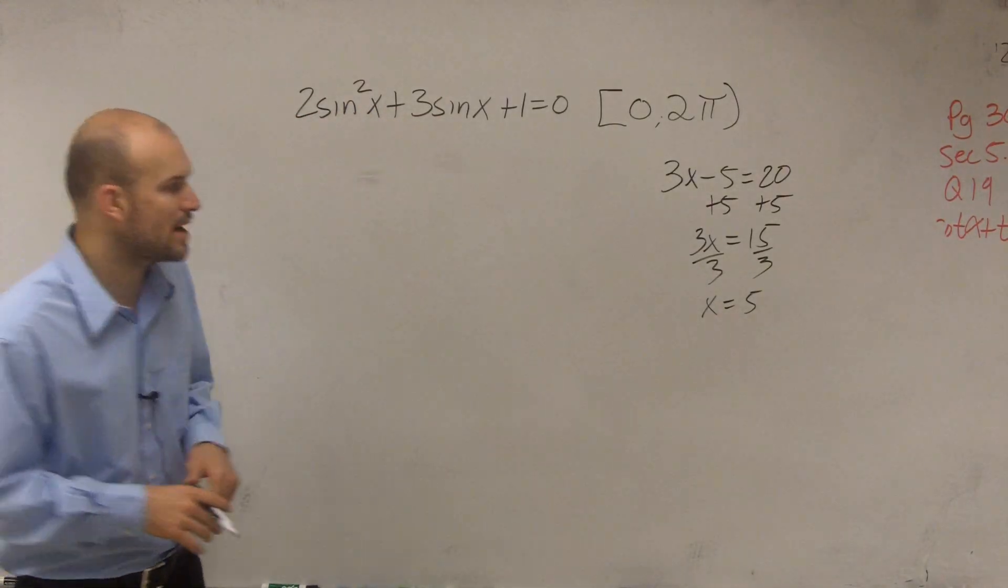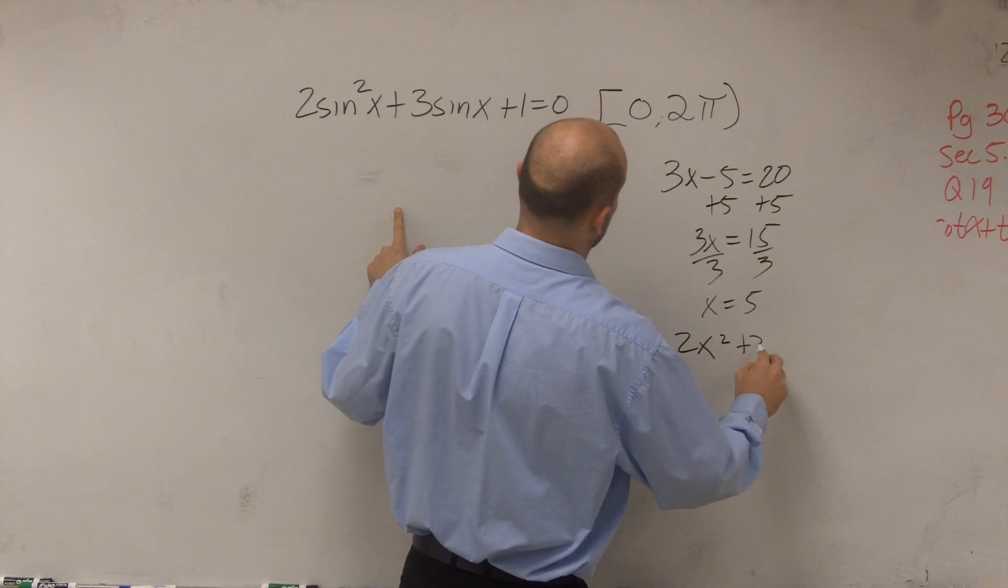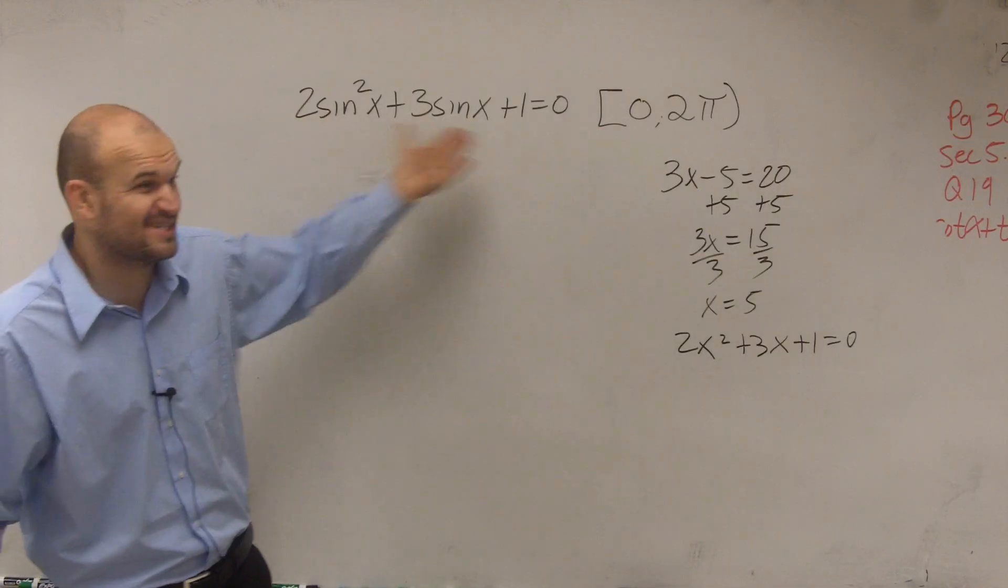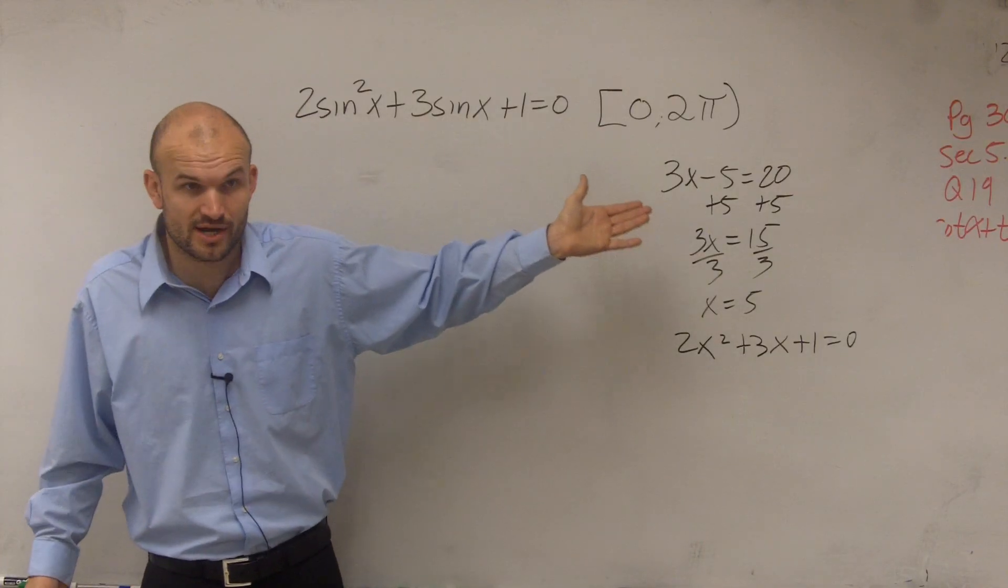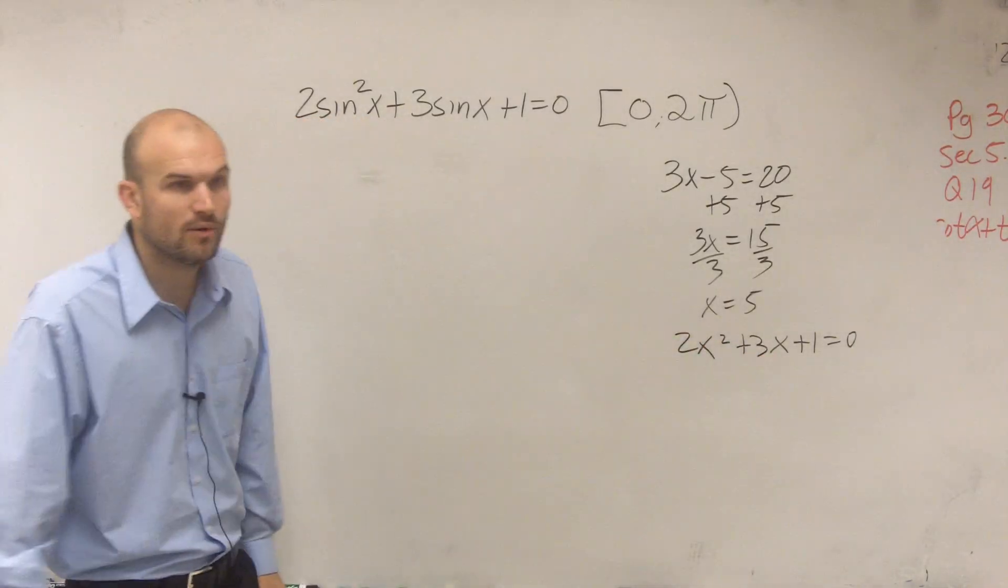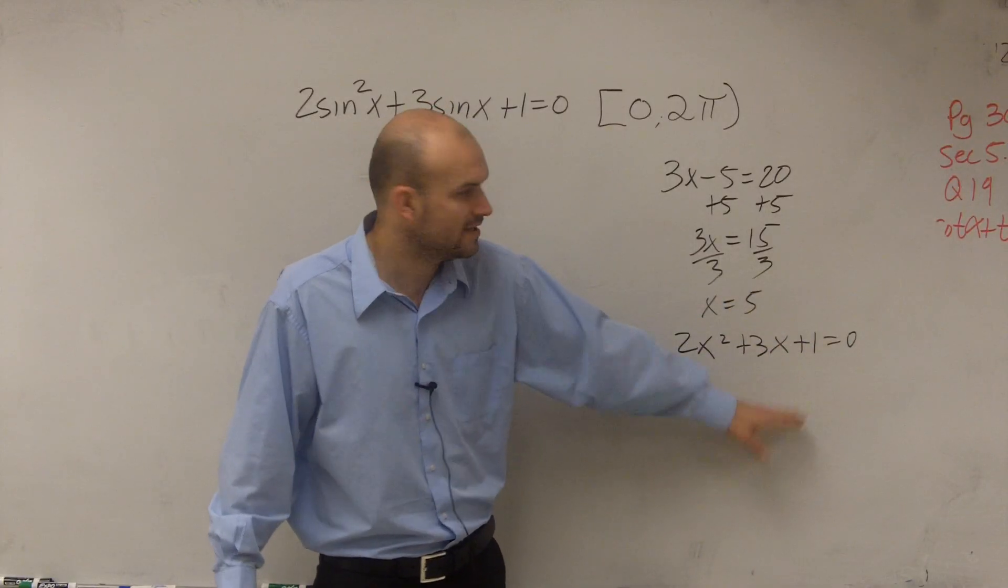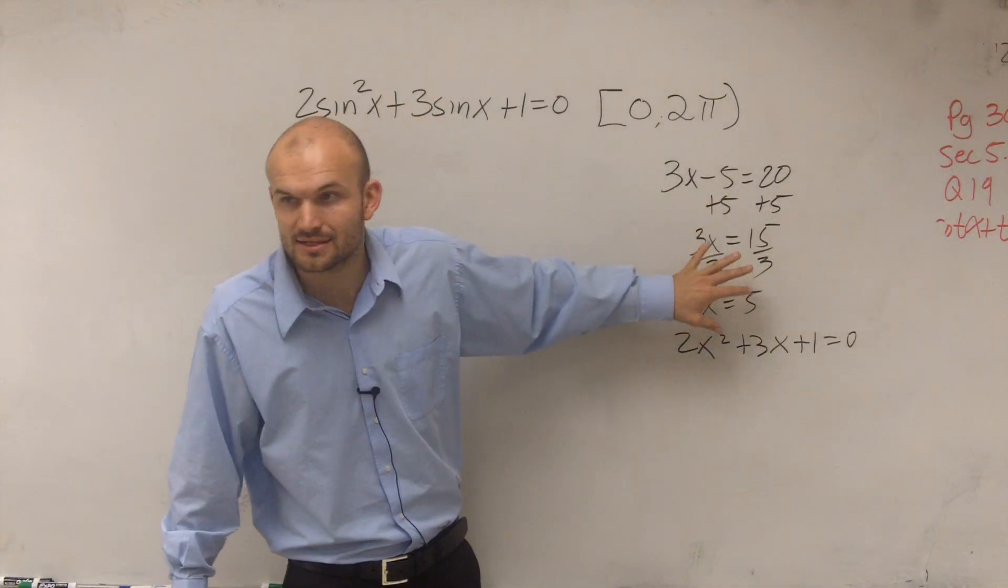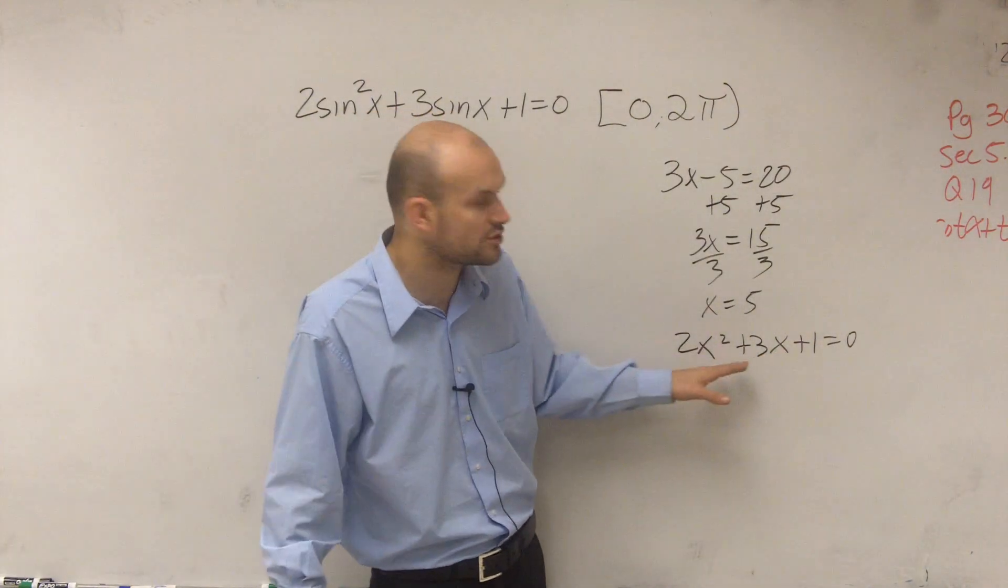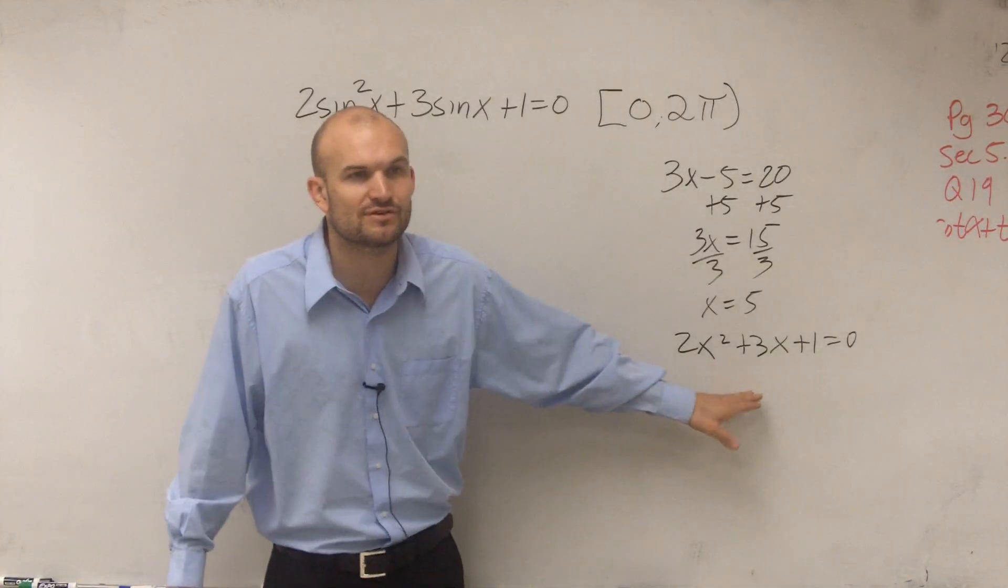Now, what happens if I give you a problem where it maybe looks like this? 2x squared plus 3x plus 1 equals 0. You guys can notice this is really the exact same problem, except I'm just not dealing with the trig functions. So how do we solve something like this? You can't subtract the 1 and then try to solve for x. This process doesn't work when you have a squared variable, and you have more than one. So we can't just use inverse operations.